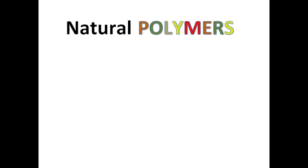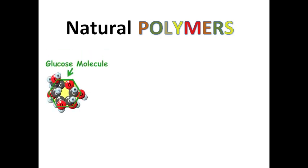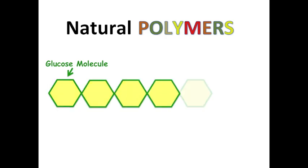So to make a carbohydrate polymer we start with this glucose molecule, which is represented by this hexagon shape. You just have to link several of these molecules together in a long chain.